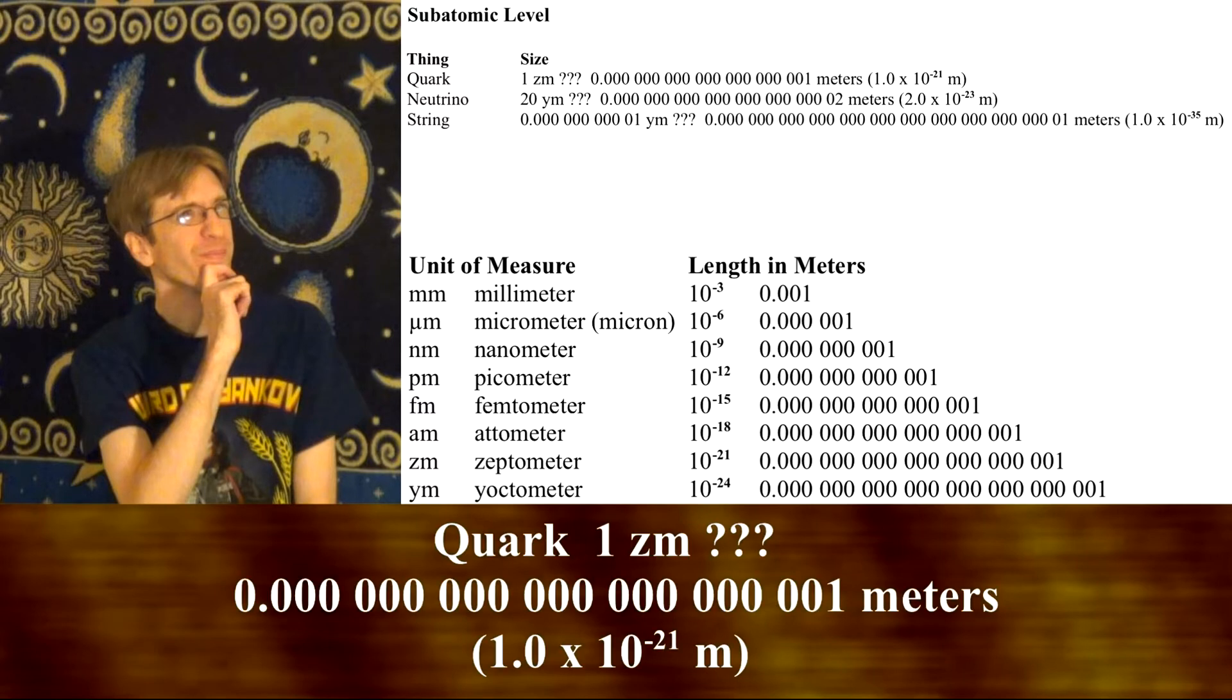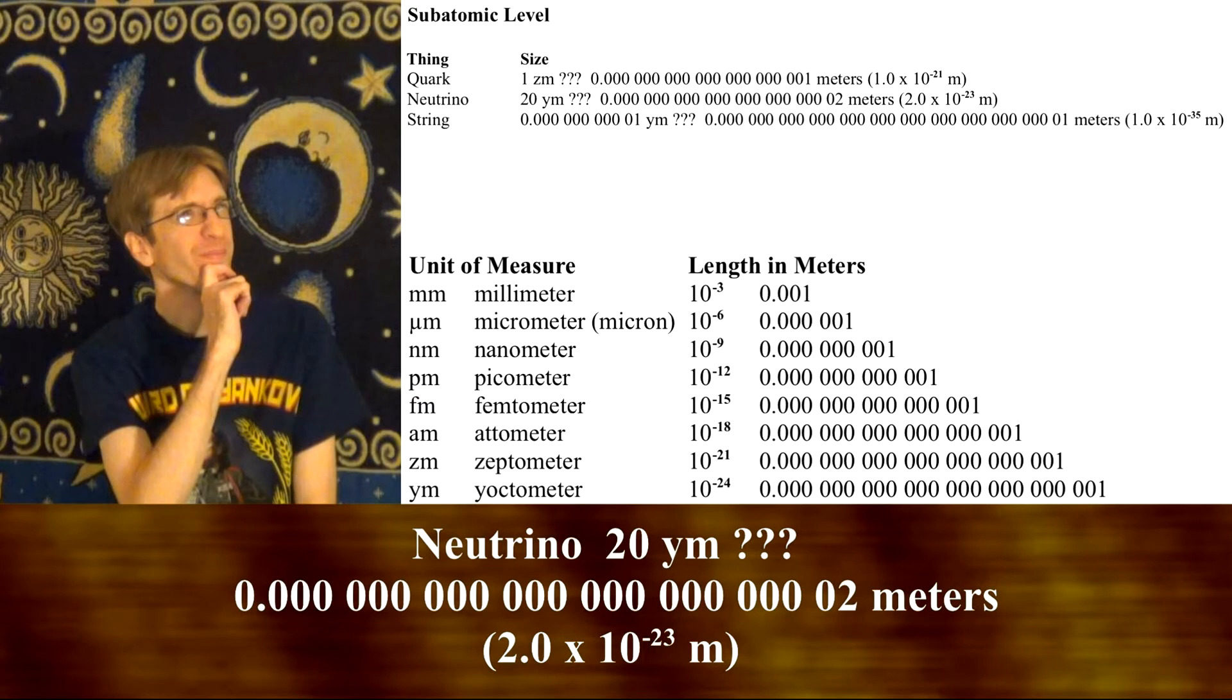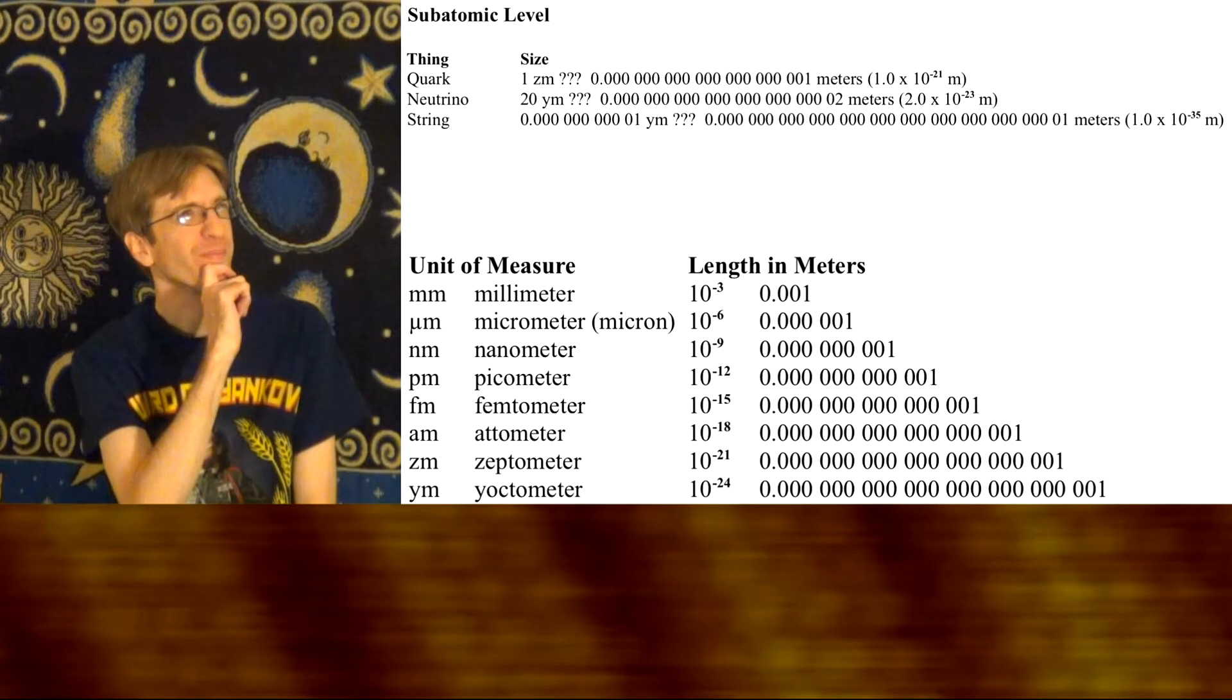The smallest quark is about 1 zeptometer in size, and the smallest neutrino is about 20 yoctometers. The size of quarks and neutrinos is debatable, and they may not even have a measurable size at all. That goes for electrons and other subatomic particles as well.